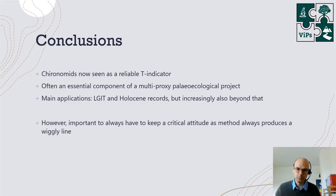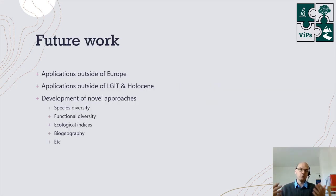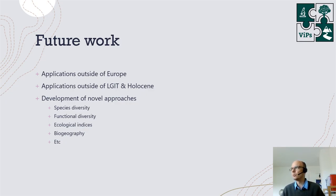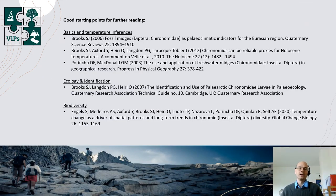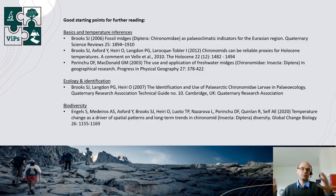It is always important to keep a critical attitude, simply because the method will always give you results but you do have to make a case for whether or not these results are actually reliable. In the near future we're probably going to see increasing applications within as well as outside of Europe, on very short sub-recent timescales as well as timescales preceding the late glacial-interglacial transition. We also see exciting novel approaches focusing more on estimates of past diversity rather than past temperature. If you want to read up more, here are some good starting papers, chapters, and books to get basic insight into chironomid ecology and their first applications as temperature proxies.